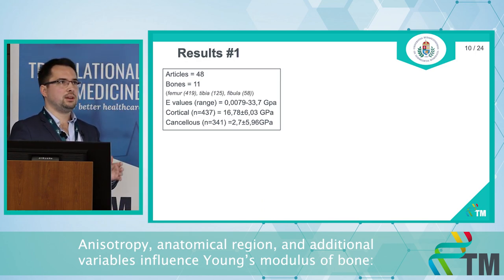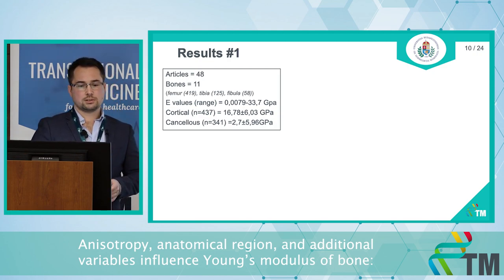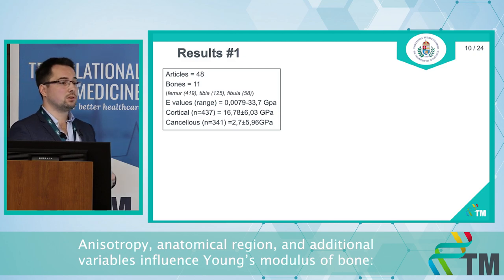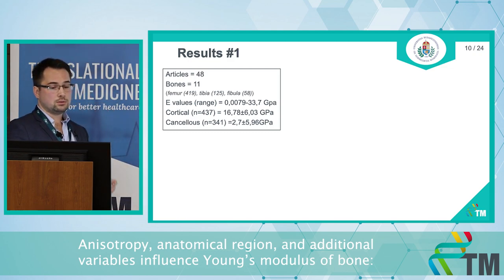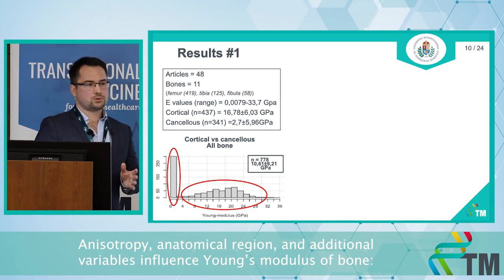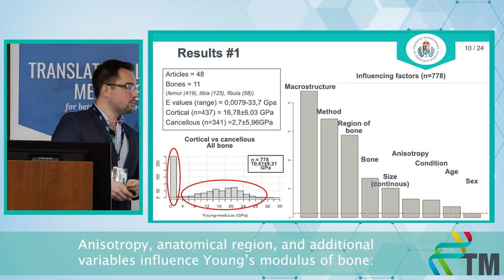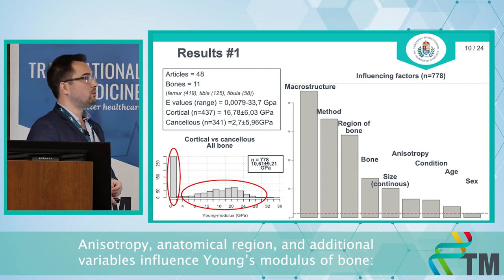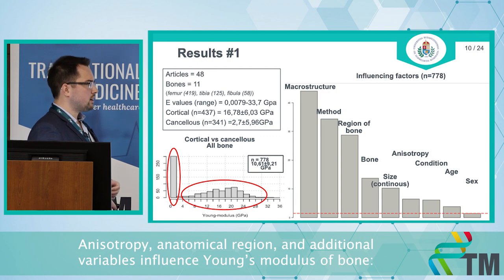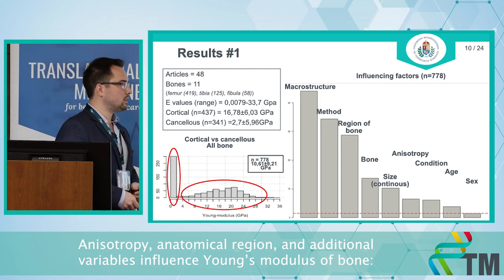In this project, I am showing only the individual Young's modulus results. There were close to 50 articles that we could include. The results showed two big groups, due to the differences in cancellous and cortical bone macrostructure. We also used a forest methodology to assess the weight of the influencing factors. The macrostructure, method, and region of the bone were the most influencing factors, followed by which specific bone it was and its size.